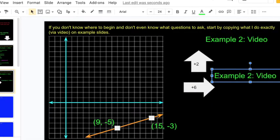That's going to mean my slope is 2 over 6, or I could reduce that down to 1 over 3.